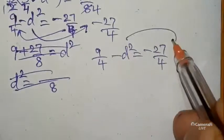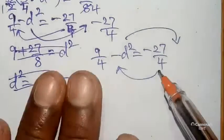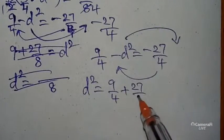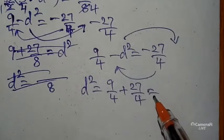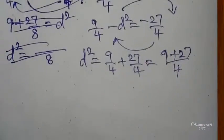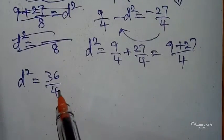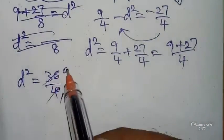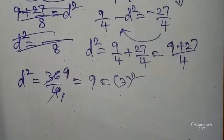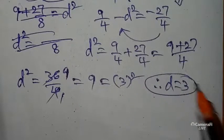Taking LCM 4, we get d² = (9 + 27)/4 = 36/4 = 9. This can be written as d² = 3². Therefore, d = 3.